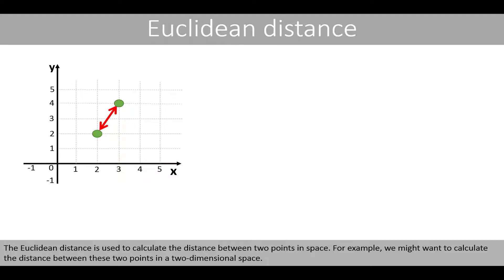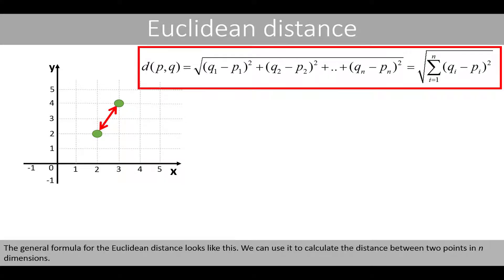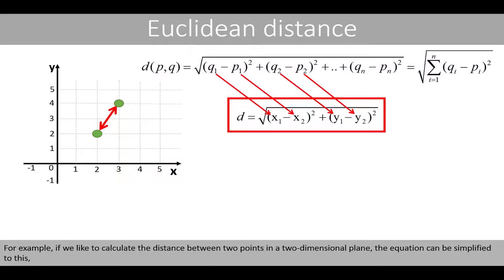The Euclidean distance is used to calculate the distance between two points in space. For example, we might want to calculate the distance between two points in a two-dimensional space. The general equation for the Euclidean distance can be used to calculate the distance between two points in n dimensions, and for a two-dimensional plane, the equation can be simplified.